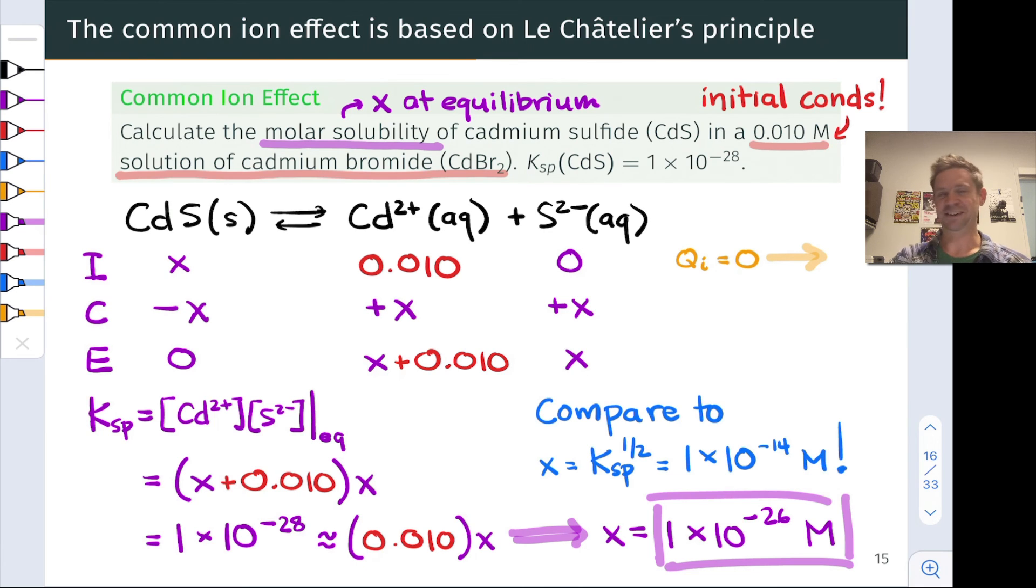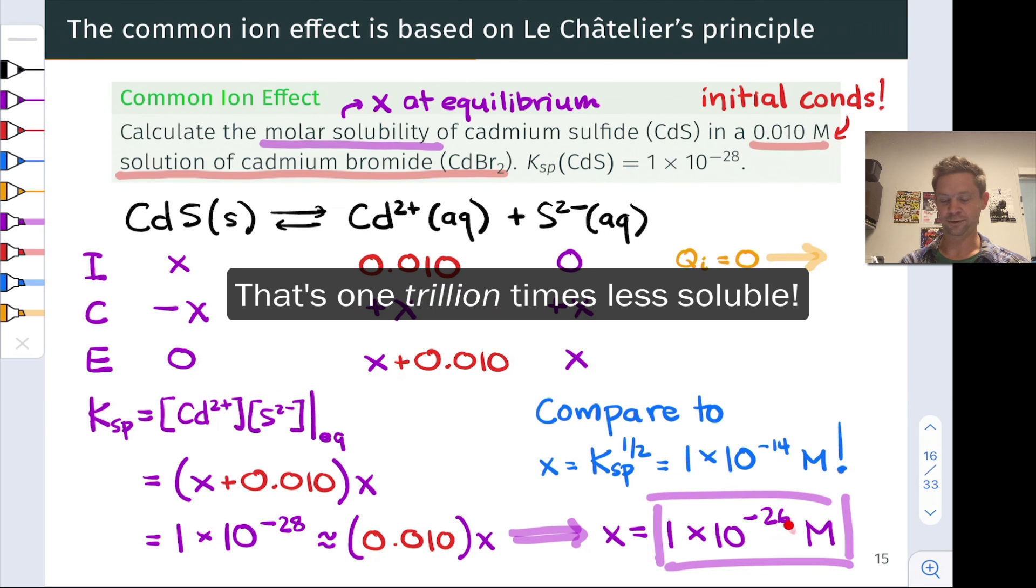That's still a very, very tiny concentration, but notice what the initially dissolved cadmium has done. It's reduced the solubility by a whopping 12 orders of magnitude from 10 to the negative 14th to 10 to the negative 26th power.